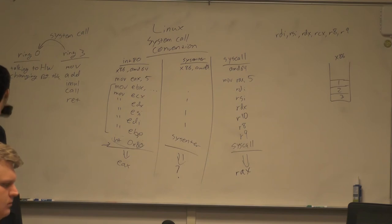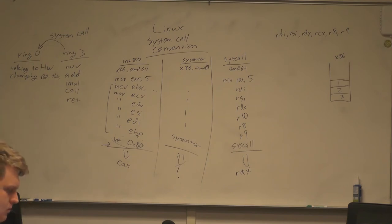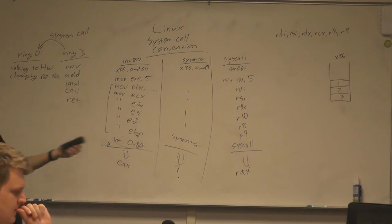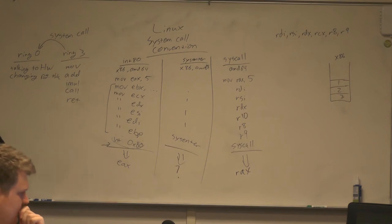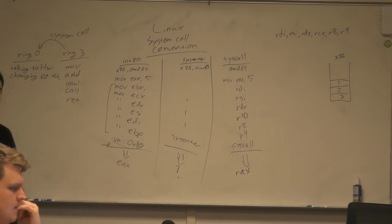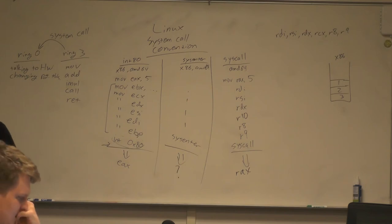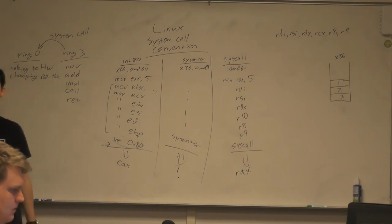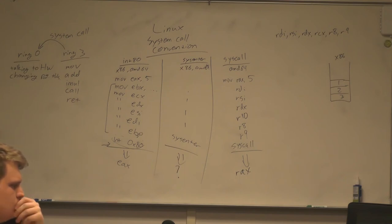What's the key difference between a function call and a system call? They both pass parameters into a function and get a return value back. The difference is: you're not involving the operating system in a regular function call. A system call is asking the OS to do something.